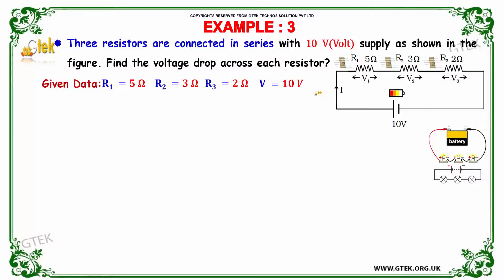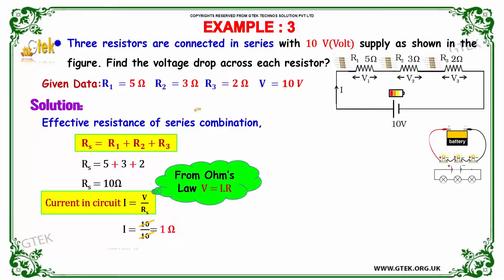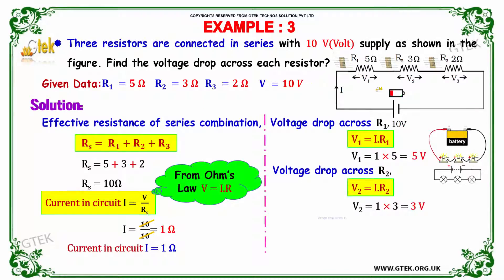The voltage is 10 ohm. We need to identify the current and voltage drop. So as you know, the effective resistance can be identified because it's in series. The total resistance R_s is equal to R1 plus R2 plus R3, 5, 3, 2, that's 10 ohm.